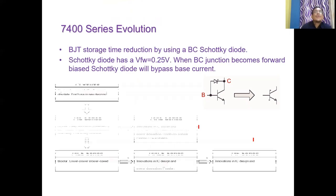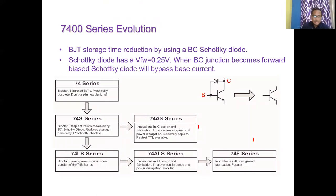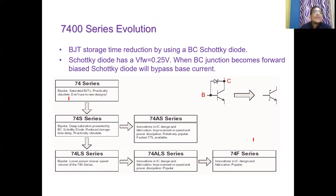7400 series evolution: the standard TTL always starts from the 7400 series. In this case, there are no sub-logic families. The first 7400 series TTL family uses simple BJT transistors, where the transistor always goes into saturation. This is practically not used in new designs. This IC has a major limitation because this is standard TTL where the transistor always goes into saturation, so it consists of a number of limitations.